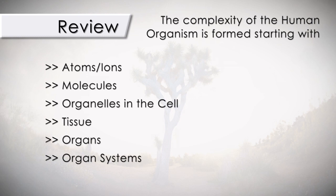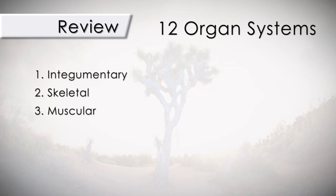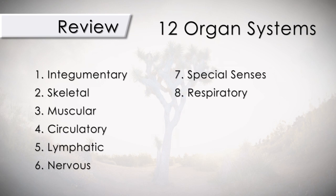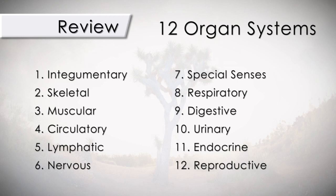As we move on through this series, we will be covering each system in detail. The twelve organ systems are: Integumentary, Skeletal, Muscular, Circulatory, Lymphatic, Nervous, Special Senses, Respiratory, Digestive, Urinary, Endocrine, and Reproductive. In the next few videos, we will be covering the Anatomy, Physiology, and Pathophysiology of the Cell.